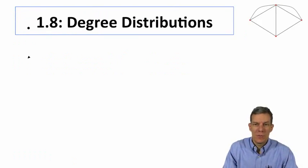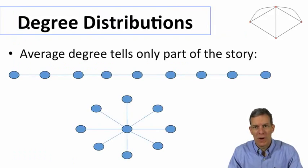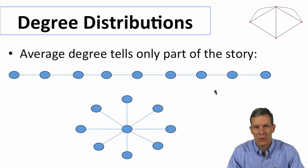Let's talk about the distributions of degrees in the network. Why do we care about this? When we're trying to characterize networks in terms of basic properties, knowing whether most nodes have very similar degrees or very different degrees can give us a lot of information.